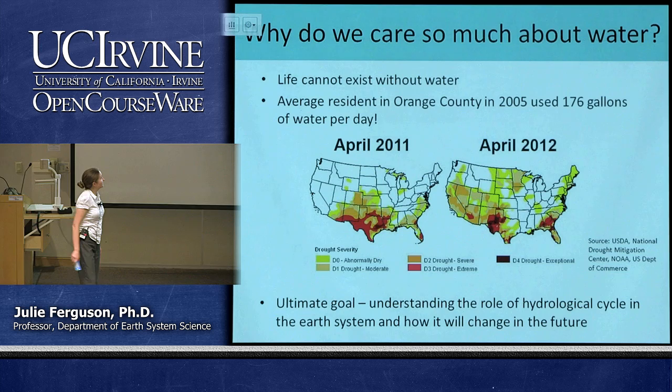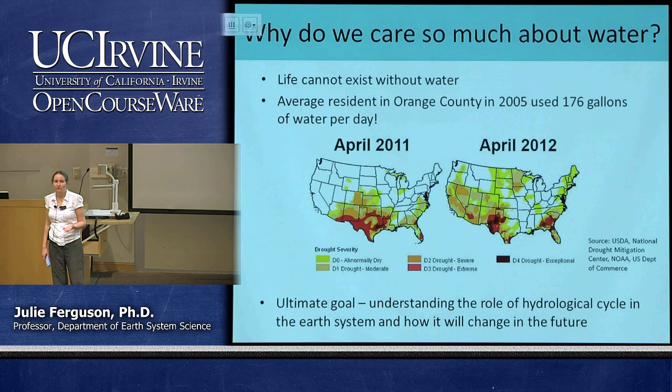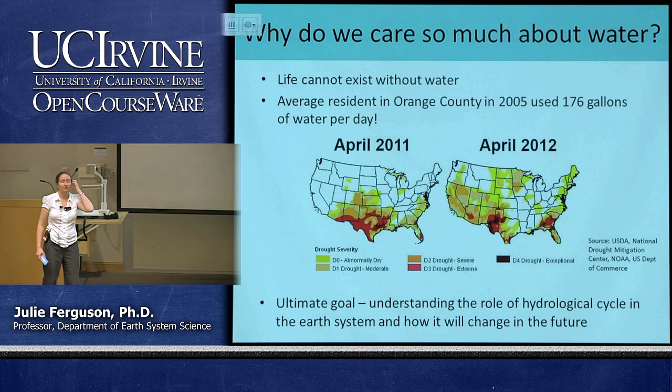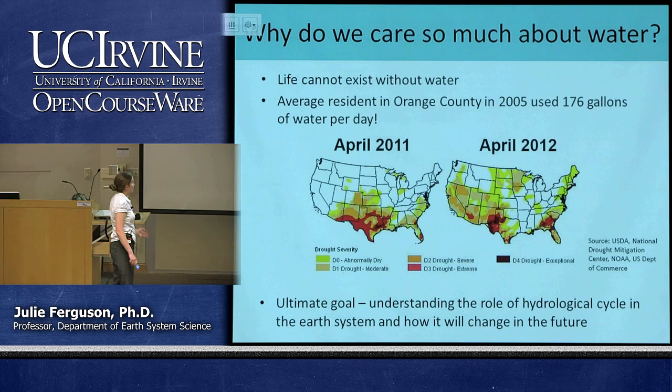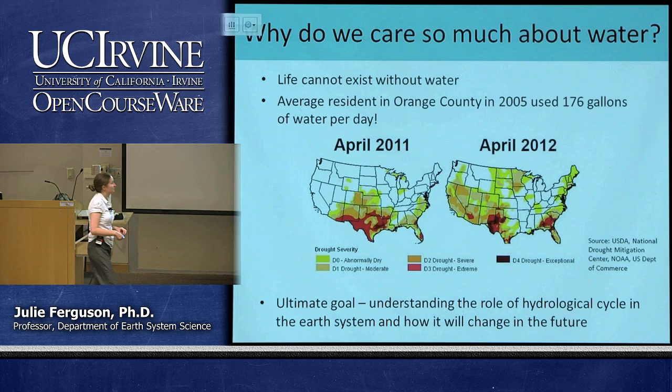The average Orange County resident uses 176 gallons of water a day — and remember, we live in a desert. South California is a desert, and we have to think about where this water is coming from. Next week, when we talk about the hydrosphere, we'll learn more about where our water actually comes from. But in terms of understanding the atmosphere as part of the water cycle, we want to understand the role of that hydrologic cycle and how it will change in the future.